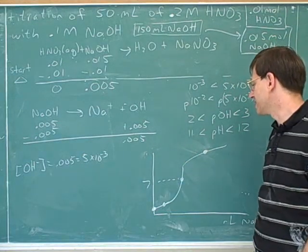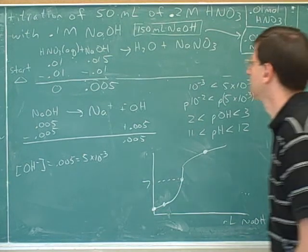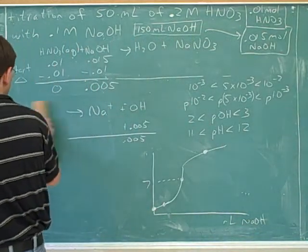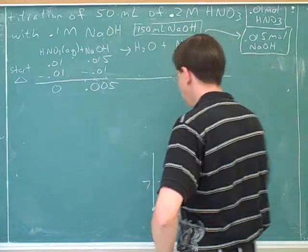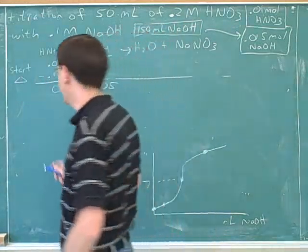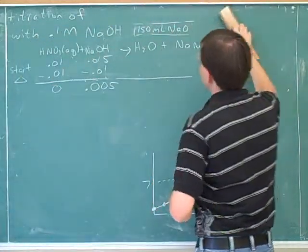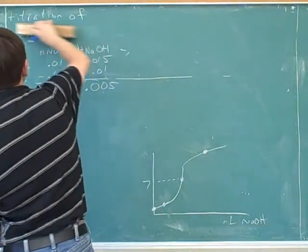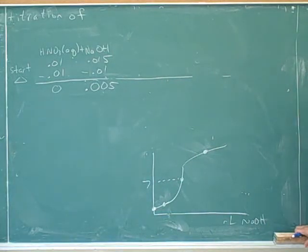And again, one key point is that the equivalence point is the steepest point on the graph. This was a case where we were titrating a strong acid with a strong base. The half-equivalence point — where pH equals pKa — that mainly has to do with weak acids and bases, not strong acid/strong base. Maybe in a minute we can get to that.